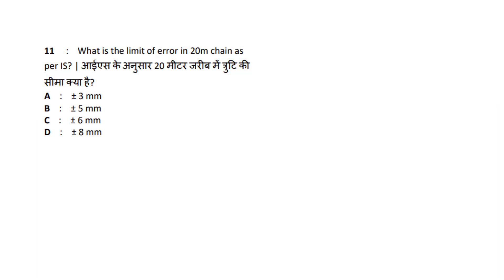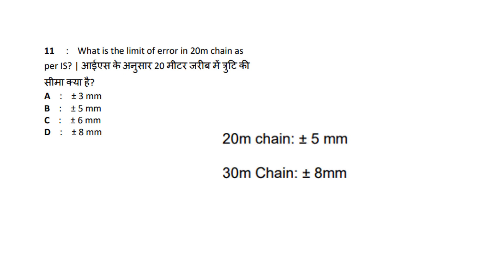Question 3: What is the limit of error in a 20 meter chain as per IS? The limit of error as per IS for a 20 meter chain is plus or minus 5mm. The answer is option B.